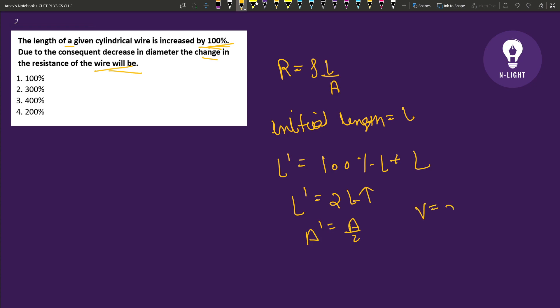If we have volume, what will be constant? It will be constant: twice L into A by 2. Volume we have is area into length, okay?